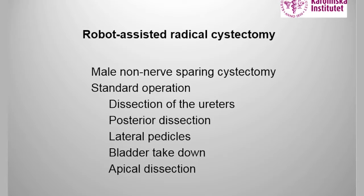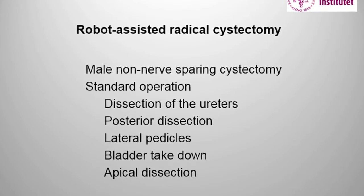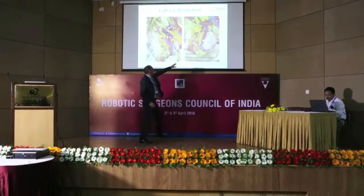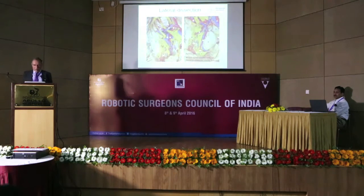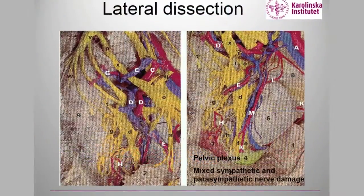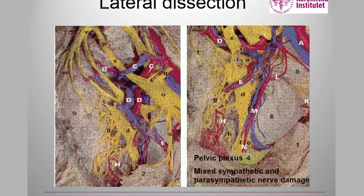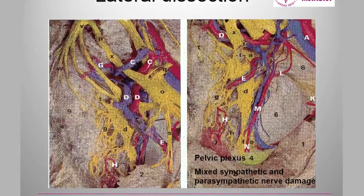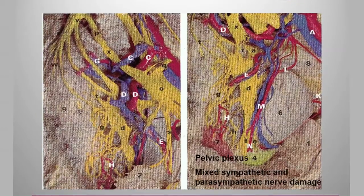First we always dissect the ureters, then do a posterior dissection, go lateral, take down the bladder and do the apical dissection — always the same way. With the robot there is an advantage: you see small anatomical details. You can see the bladder, the prostate, and all the yellow — basically the nerves going down on the side. You can see the pelvic plexus, the seminal vesicles, the prostate and bladder, and understand how easy it is to damage this plexus when you do a cystectomy — not only during prostatectomy but also at this level.